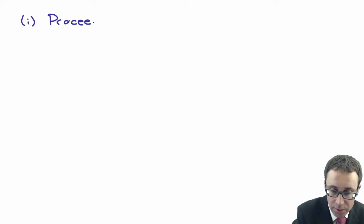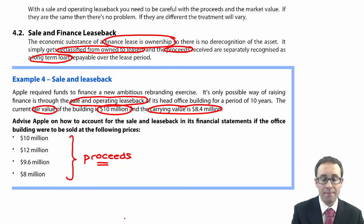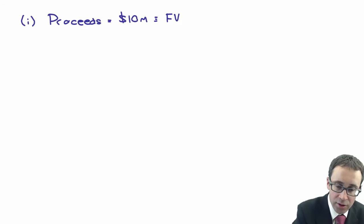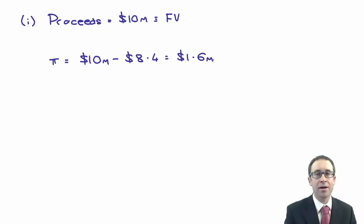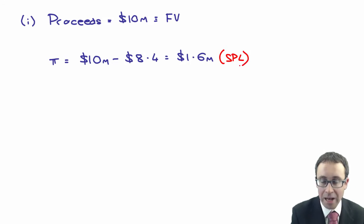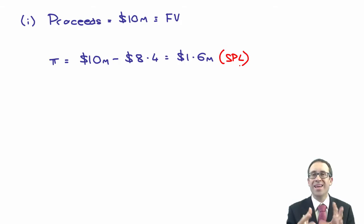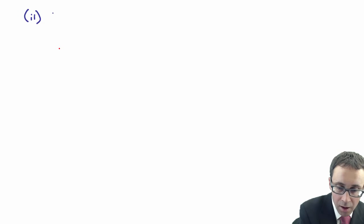Scenario 1: the proceeds are equal to £10 million, which is the same as the fair value. This is very straightforward - you de-recognize the asset and recognize a profit on disposal of £10 million less the carrying value of £8.4 million, giving £1.6 million. You recognize that profit immediately in profit or loss. If the proceeds are at fair value, just recognize a profit or loss on disposal - nice and straightforward.